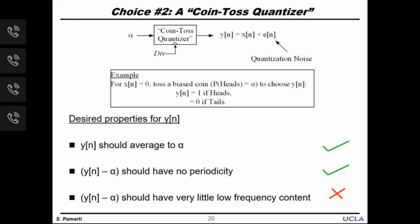Now let's look at what I call a coin-toss quantizer. On every edge of the divider output, a hypothetical biased coin is tossed, and y[n] is set to 1 on heads and 0 on tails. The probability of heads exactly equals alpha, so y[n] will have the right average. It is also random, so y[n] will not have any periodicity. However, y[n] minus alpha is basically a white noise sequence — this is like white FM noise and results in large 1/f² phase noise. So this is also not particularly useful.